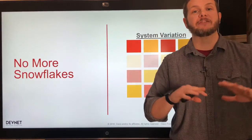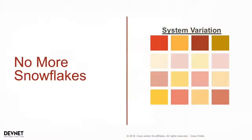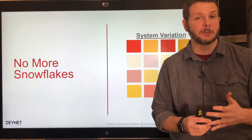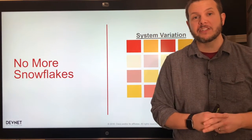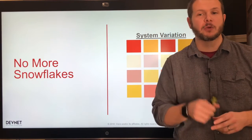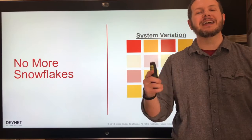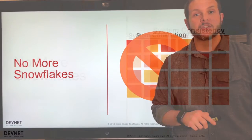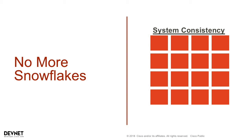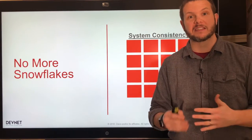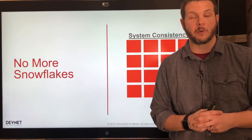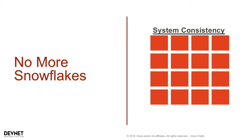Secondly, we need to get away from snowflakes in our infrastructure. Snowflakes refer to system variation where, depending on who did the configuration, what their beliefs were about how a standard should be interpreted, when that configuration was done, and how thoroughly they followed the runbook, we end up with system variation across our entire platform. With network configuration management solutions we can move away from snowflakes to system consistency. It may not be as interesting to look at, but that's great from a reliability perspective.